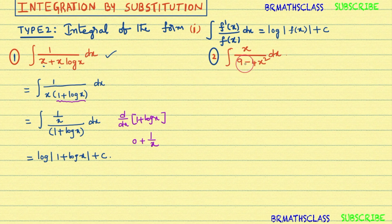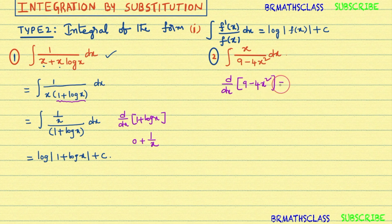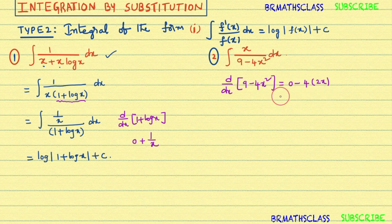Now see the second problem, which is also in the form of f'(x)/f(x) dx. To understand this, first I will differentiate 9 − 4x². The derivative of 9 is 0, minus 4 times the derivative of x², which is 2x. That equals −8x. So the derivative of (9 − 4x²) is −8x.